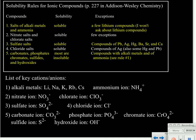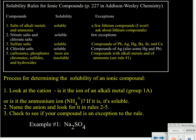You may want to pause at this point and write down this list. Our first example is Na₂SO₄. We look at the first ion, Na. Sodium is a group 1A metal — an alkali metal — which means it's going to be soluble due to rule number one. We don't have to look at the rest of the compound; it's got an alkali metal in it, so it's soluble and will dissolve in water.